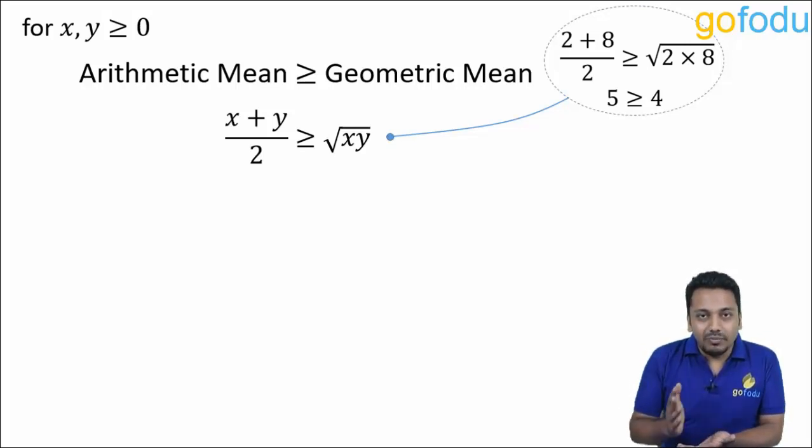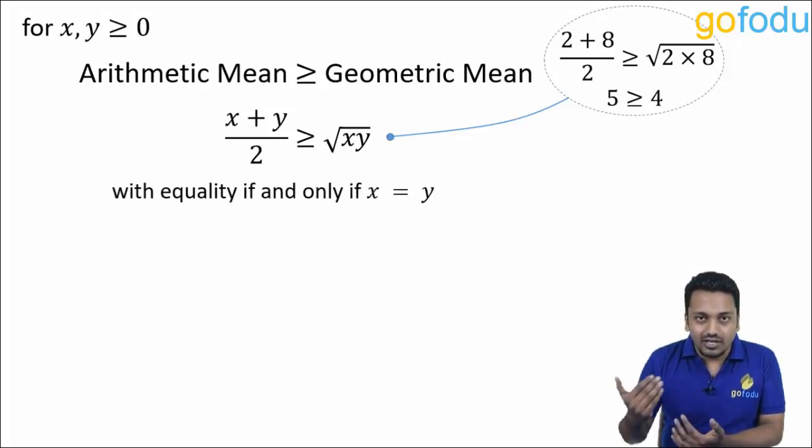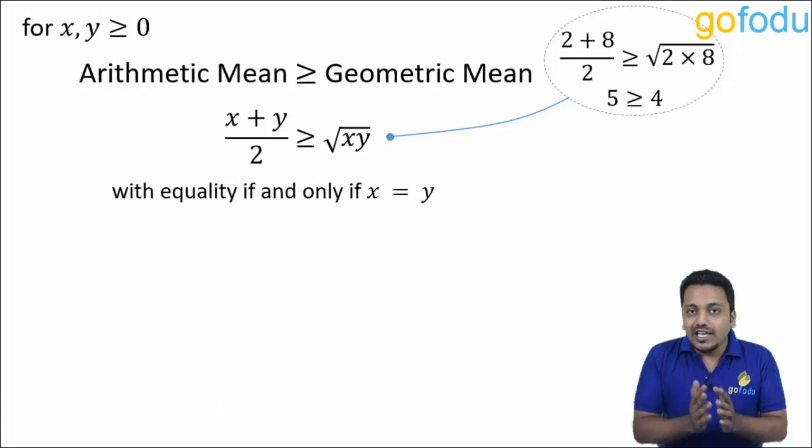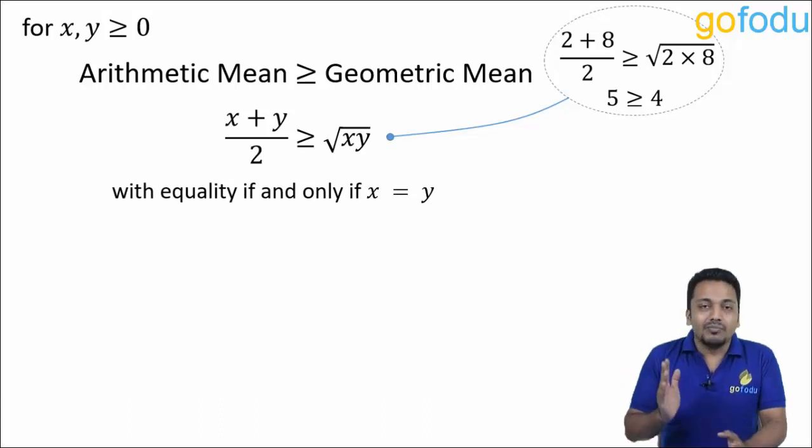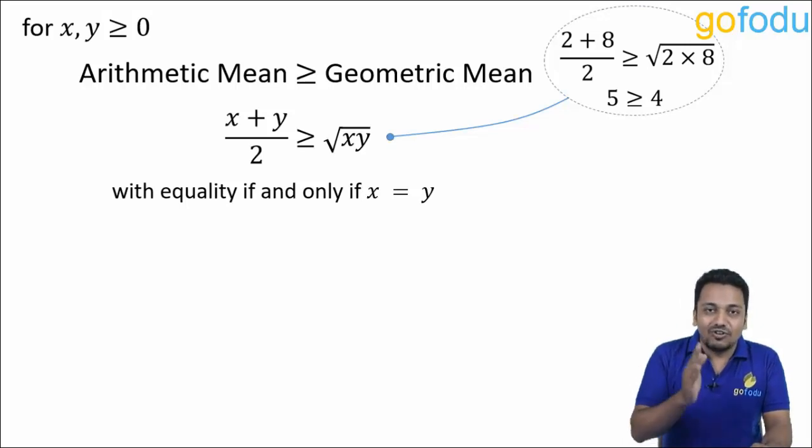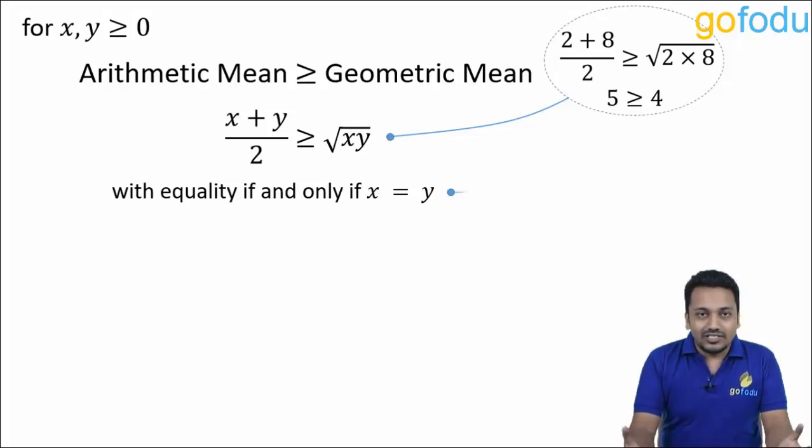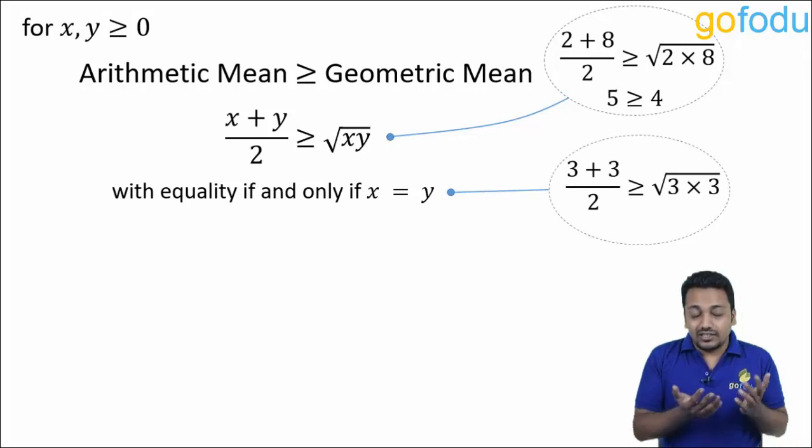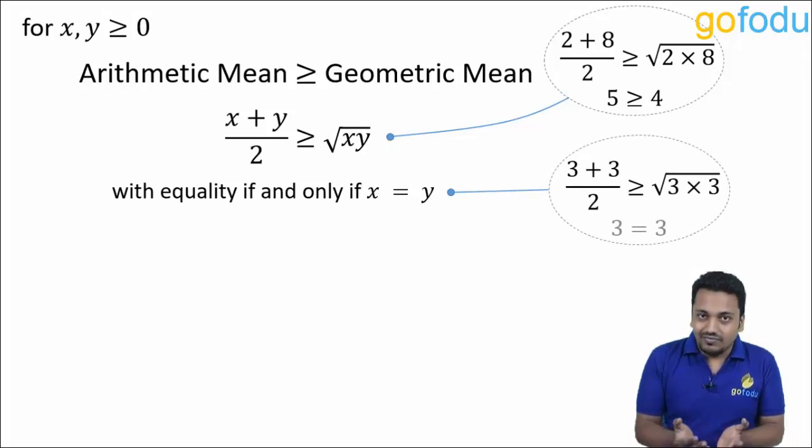Now arithmetic mean will be equal to GM, it will be equal to geometric mean if and only if the numbers are equal, that is x is equal to y. For example, AM of let's say three and three, that would be equal to GM of three and three. Three is equal to three. And this is all the logic which you will ever need to solve questions from this topic.